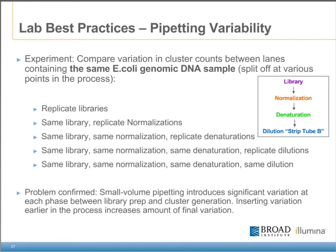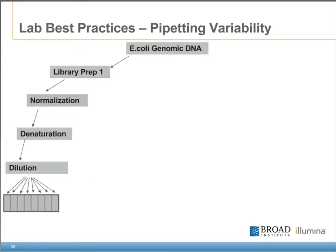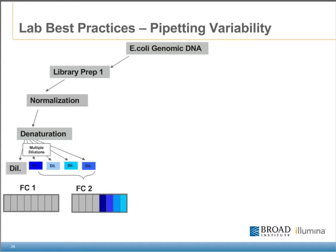I want to cover one last thing on the topic of cluster densities — an experiment that illustrates the effects of pipetting small volumes. It was performed by Niall Gormley at Illumina and controlled for variation introduced at each phase between library prep and cluster generation, by splitting a sample at various points and continuing with duplicates in parallel. It shows that the more small-volume pipetting steps a sample encounters, the more unpredictable its final result will be. The experimental design used five flow cells. For the first flow cell, a single genomic library was normalized, denatured, diluted, and loaded into all eight lanes. This dilution was also loaded onto four lanes on each of the other flow cells as a control. For the second flow cell, four lanes were the same dilution as on flow cell one; the other lanes took the same denaturation but were diluted four separate times, attempting to perform exactly the same dilution four times.